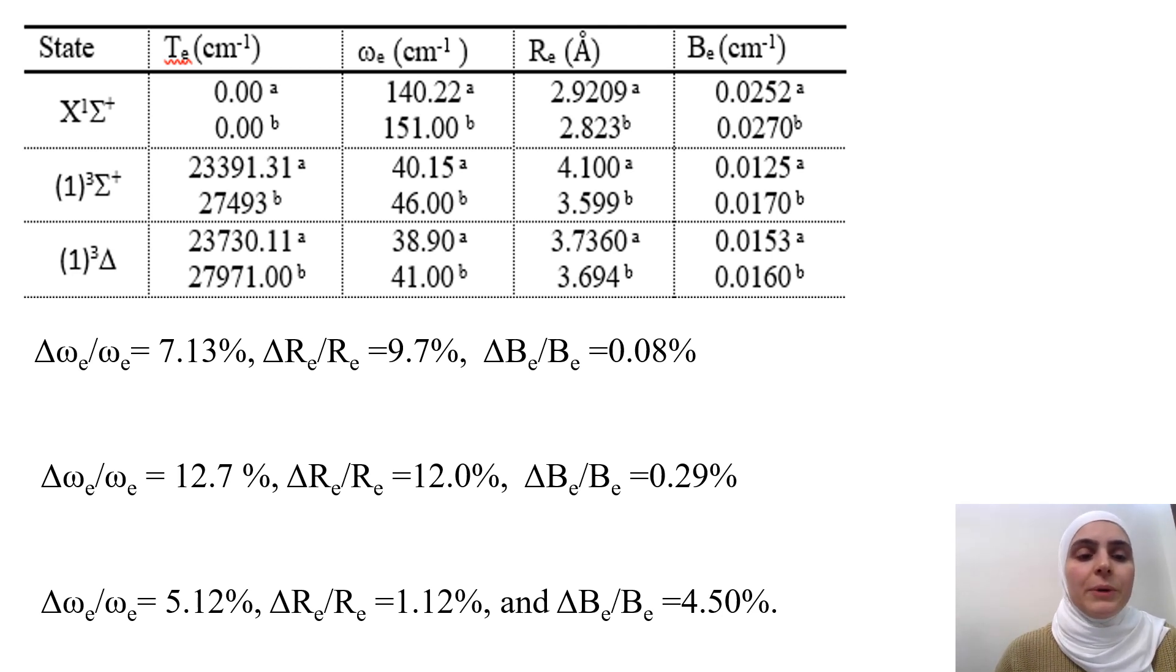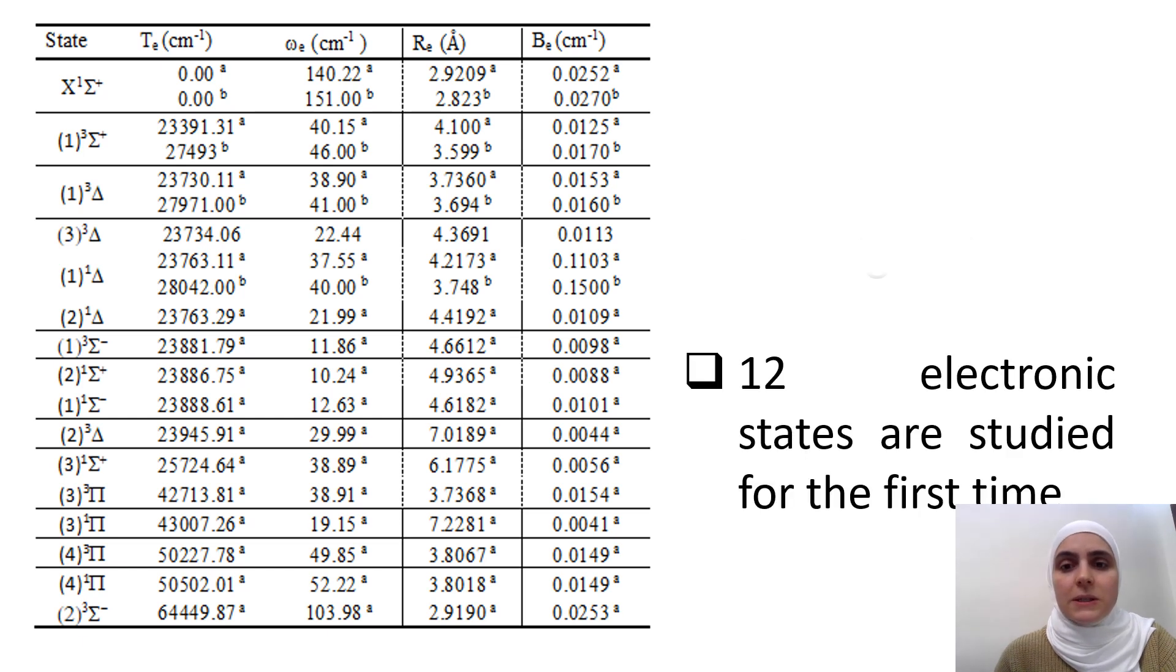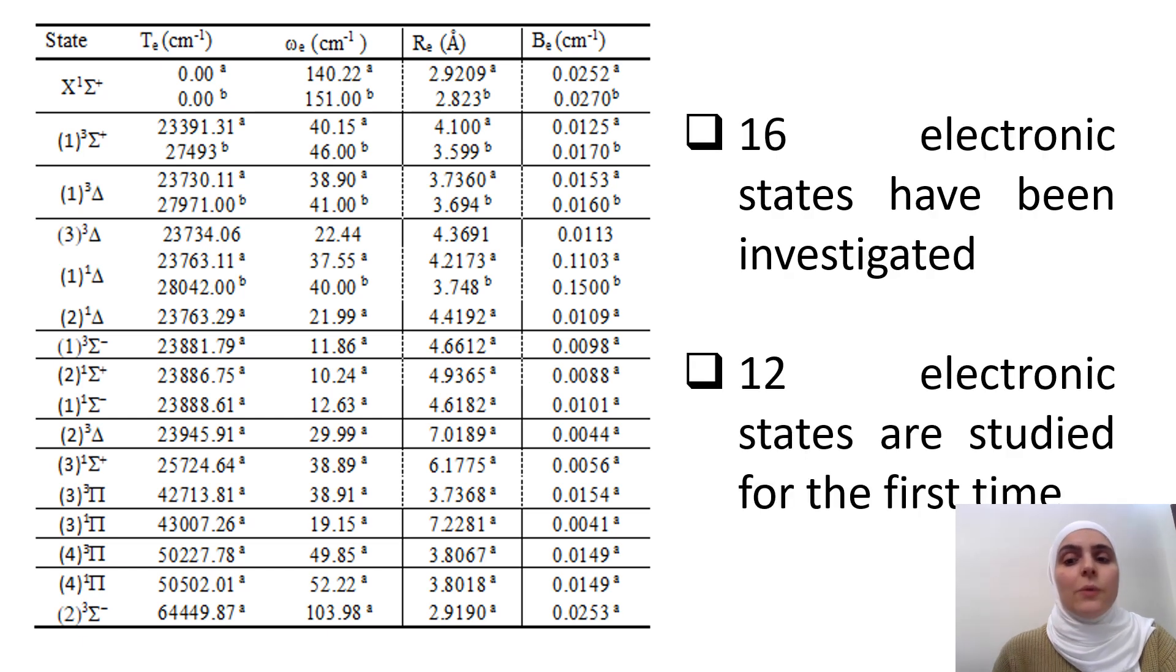Same as if we compare the first sigma plus, we find that the relative difference in omega e is approaching 12.7%, 12% in Re and in Be is 0.29%. And also the strong agreement is in the third delta, the first delta state where the difference in omega e is approaching 5.12% and 1.12% for Re and 4.5% for Be. As you see here in this table, 16 electronic states have been investigated in which 12 are studied for the first time.